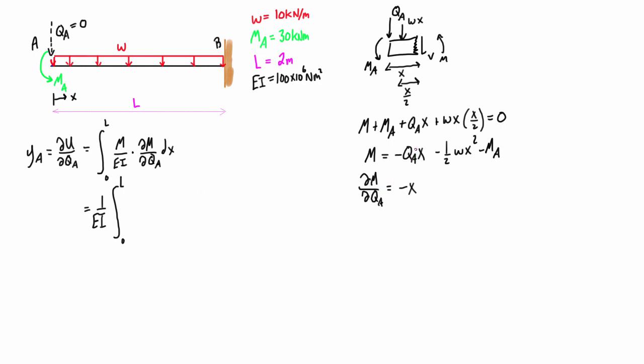At this point when we plug it back in after we found the partial derivative, now we can set QA to zero. Notice if we had set QA to zero here then if we took the partial derivative of it, that just doesn't mean anything useful to us.